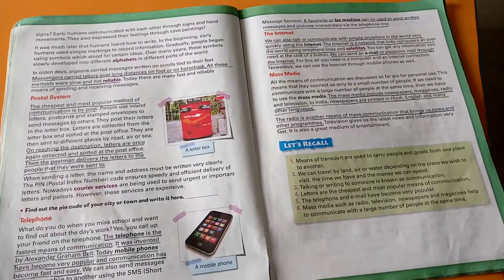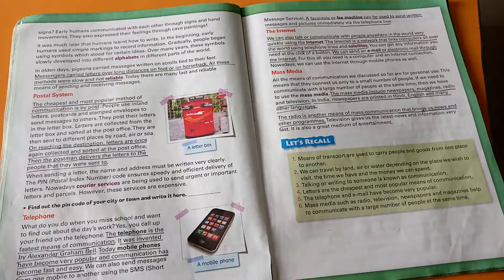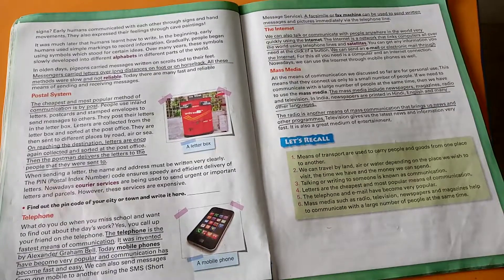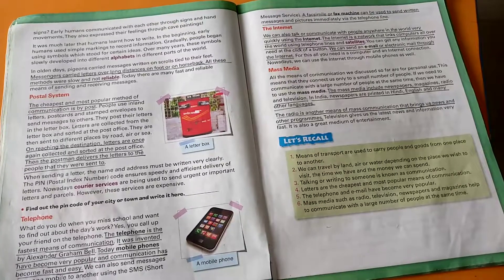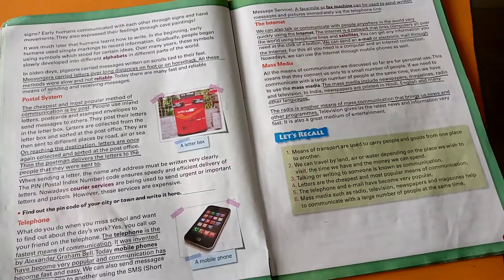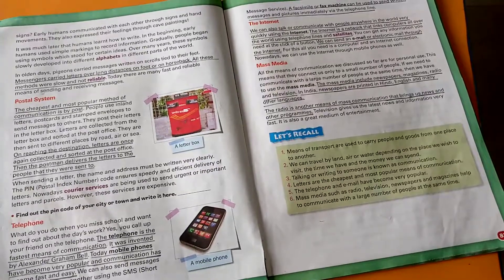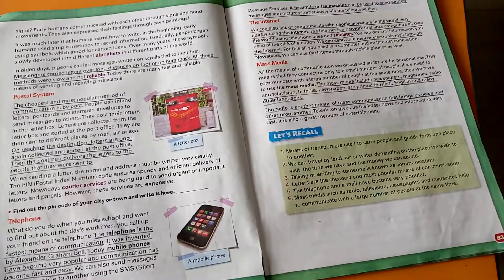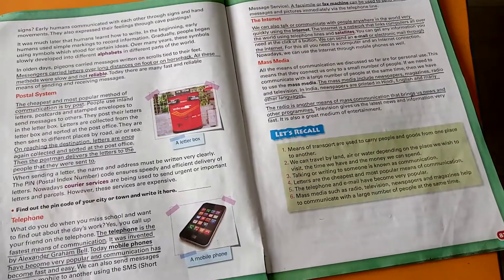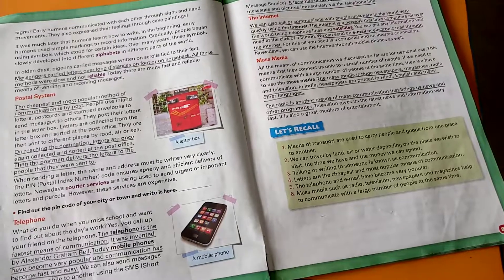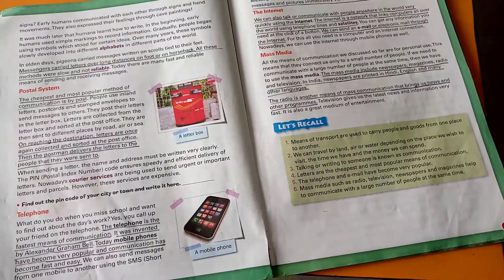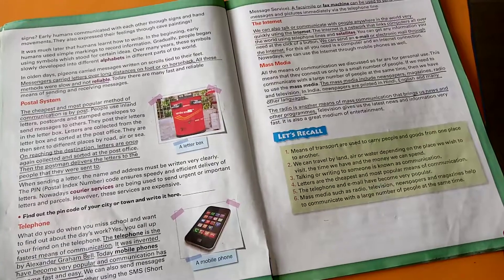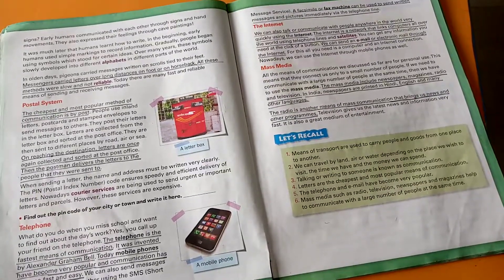The internet. We can also talk or communicate with people anywhere in the world very quickly using the internet. The internet is a network that links computers all over the world using telephone lines and satellites. You can get any information you need at the click of a button. We can send an email or electronic mail through the internet. For this, all you need is a computer and an internet connection. Nowadays, we can use the internet through mobile phones as well.